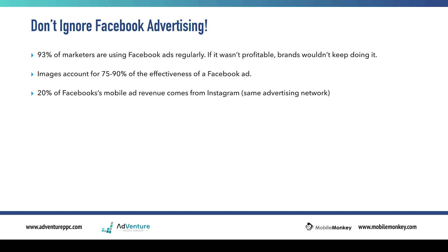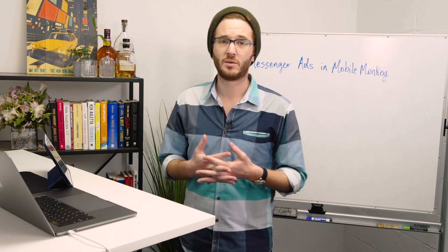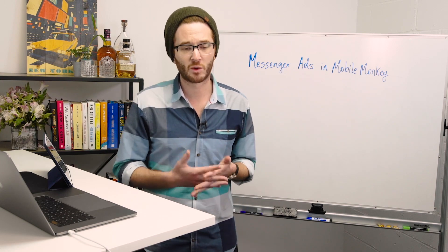20% of Facebook's mobile ad revenue comes from Instagram, and it's the same ad network. When you run click-to-Messenger ads, they can show up on Instagram as well, and you can choose a separate image for Instagram. The average CPC for Facebook ads is $1.80, and average CTR is under 1%. We're seeing a 50 to 100% increase in CTR and a similar decrease in CPC with click-to-Messenger ads, and in certain cases far greater results. It's a very exciting time to be involved with Facebook advertising and working with Facebook bots.